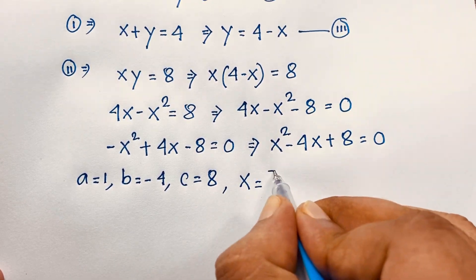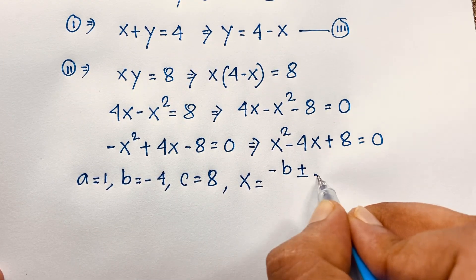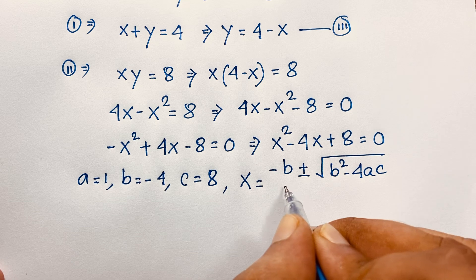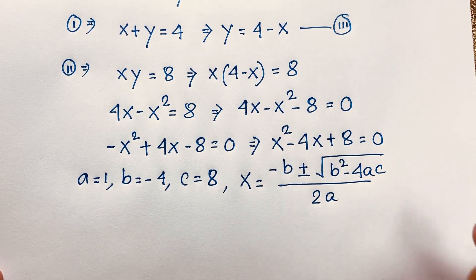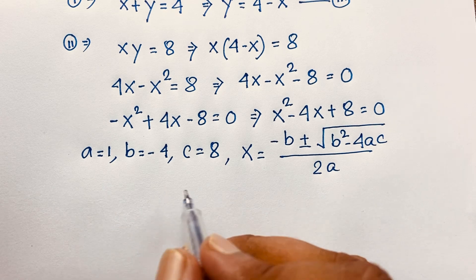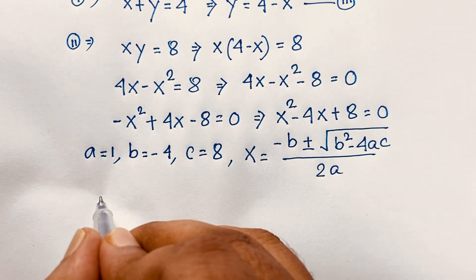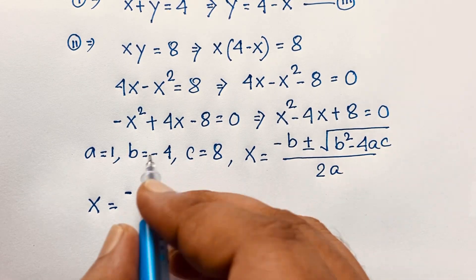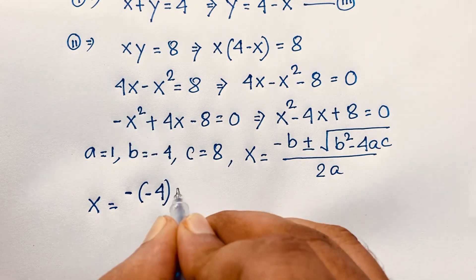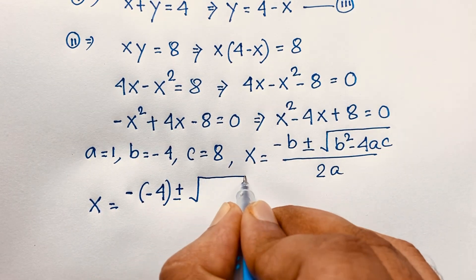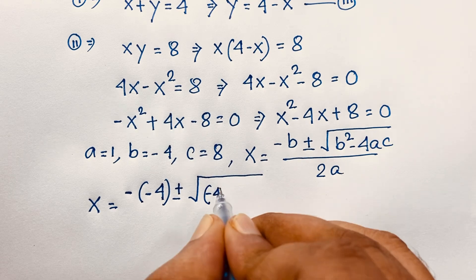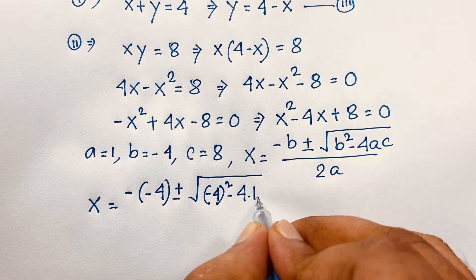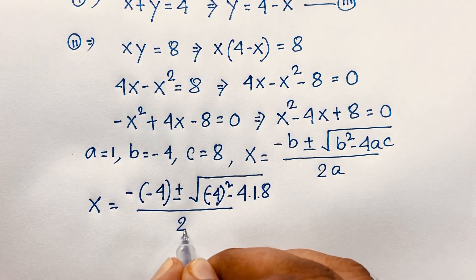x equals negative b plus or minus square root of b squared minus 4ac, over 2a. So x equals negative (negative 4), plus or minus square root of (negative 4) whole squared minus 4 times 1 times 8, over 2 times 1.